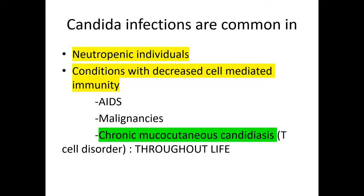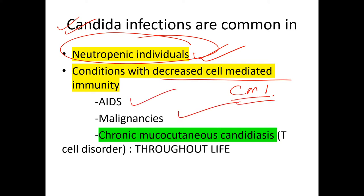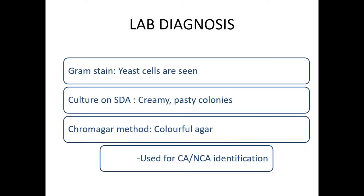Candida infections are most common in neutropenic individuals and in conditions with decreased cell-mediated immunity (CMI), such as AIDS, malignancy, and chronic mucocutaneous candidiasis. Chronic mucocutaneous candidiasis is a T-cell disorder in which the patient suffers throughout life.